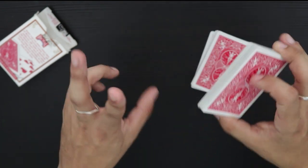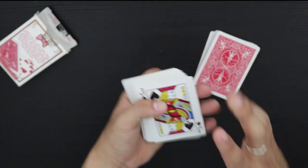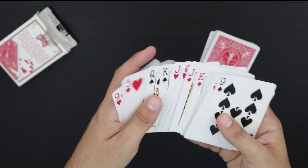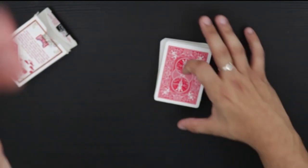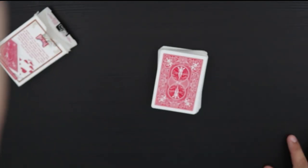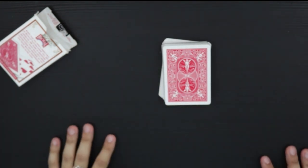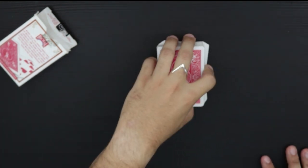So when you show them that they cut to the card that they supposedly just thought of, which could have been really any card in the deck, they're ready to just explode. So that's pretty much the method there.